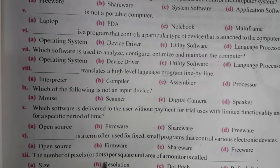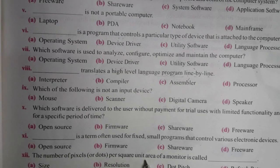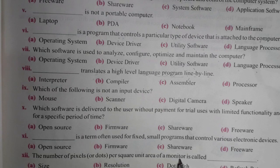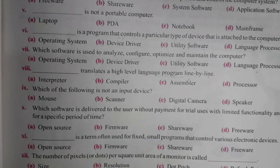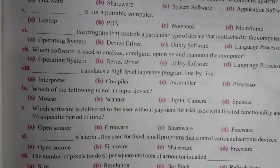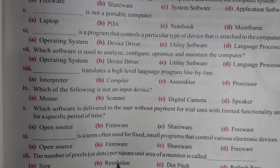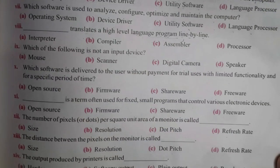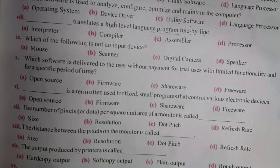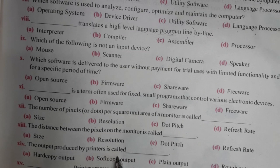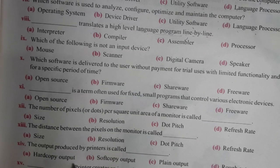The number of pixels per square unit of area on a monitor is called resolution. The distance between the pixels on a monitor is called dot pitch. Pixel وہ small picture unit ہے جو monitor پر ہوتا ہے، اسے pixel کہا جاتا ہے۔